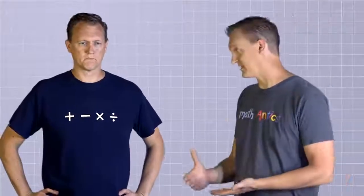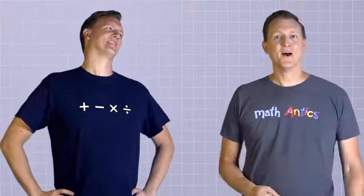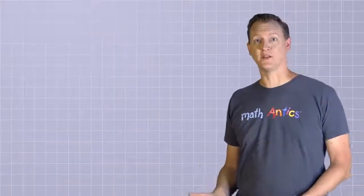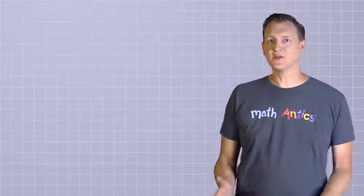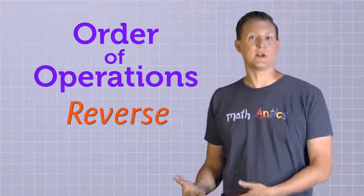Hello? If you need to know what order to do operations in, just follow the order of operations rules. You did watch that video, didn't you? I sure did. But the order of operations rules tells us what order to do operations, not what order to undo them. Oh… Well… then could we reverse the order since we're undoing the operations? Now that's a good idea! Of course it is! When solving multi-step equations, that's basically what we're going to do. Using the order of operations rules in reverse can help us know what order to undo operations in.